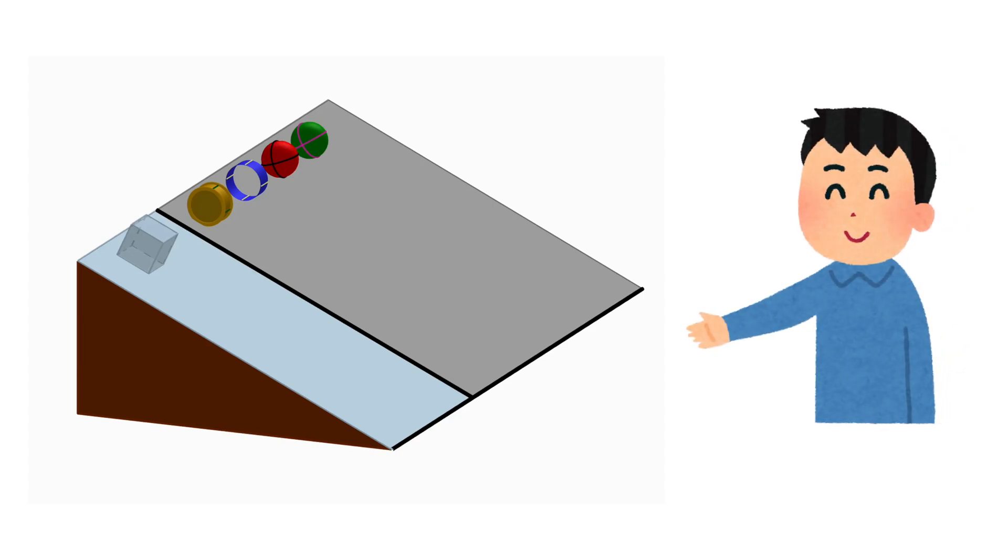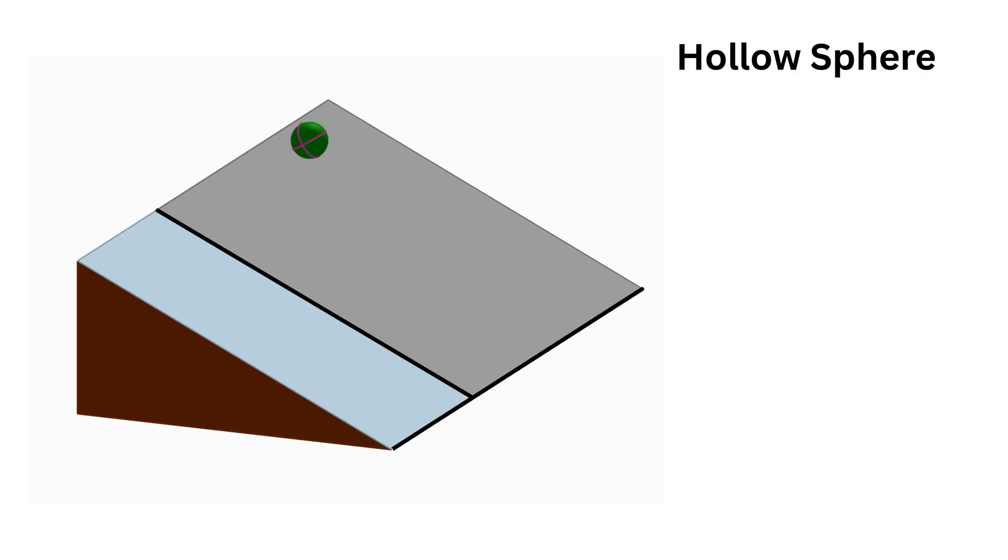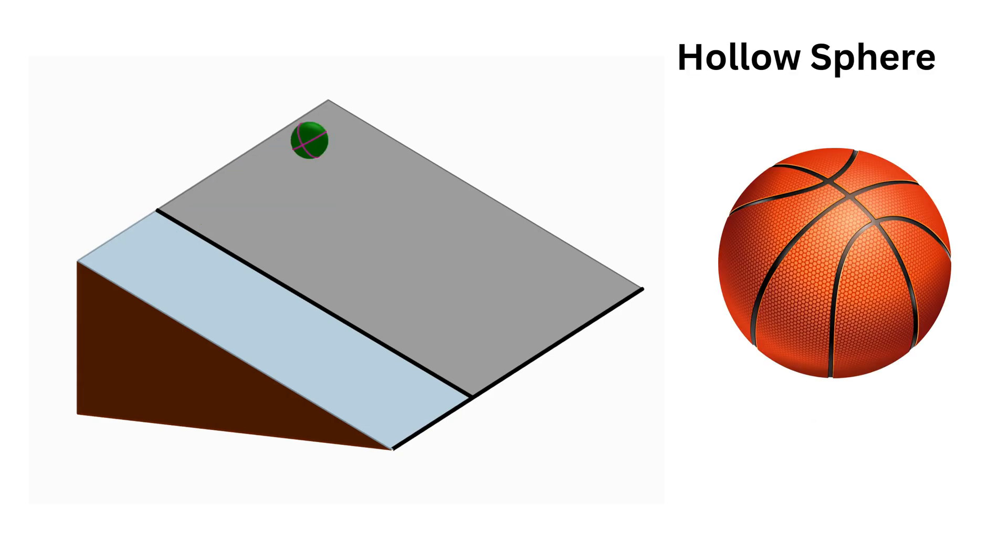Imagine we have an inclined plane and five different objects placed at the top of it. First, there's a hollow sphere, like an empty basketball or a beach ball.